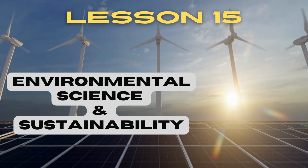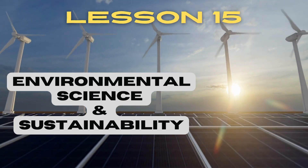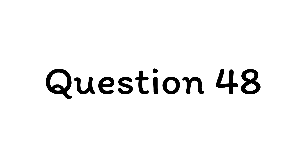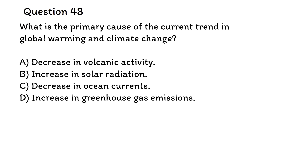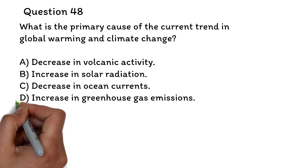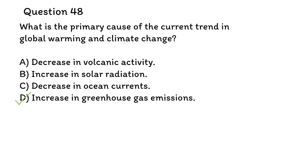Lesson 15: Environmental Science and Sustainability. Question 48. What is the primary cause of the current trend in global warming and climate change? A. Decrease in volcanic activity. B. Increase in solar radiation. C. Decrease in ocean currents. D. Increase in greenhouse gas emissions. The correct answer is D, increase in greenhouse gas emissions. These gases, which include carbon dioxide, methane, and nitrous oxide, trap heat in the Earth's atmosphere, leading to a warming effect known as the greenhouse effect.